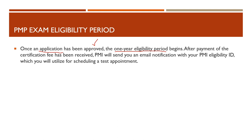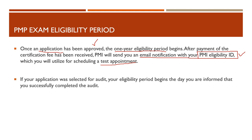After payment of the certification fee has been received, PMI will send you an email notification with your PMI eligibility ID. This eligibility ID is something that you should keep handy because it is very important. This ID is what you're going to use to schedule a test appointment, whether you're taking it from an exam center or from your home — this eligibility ID will be required.